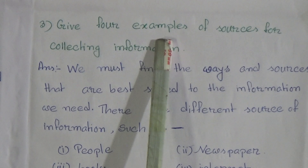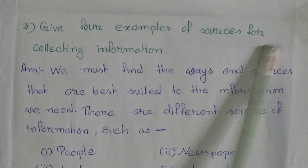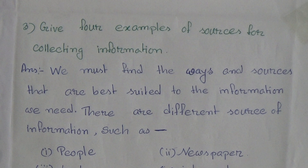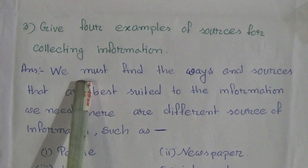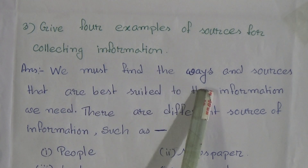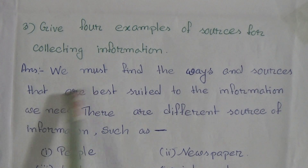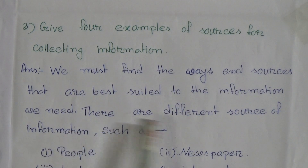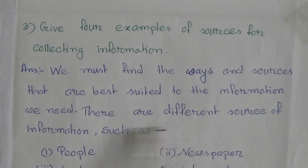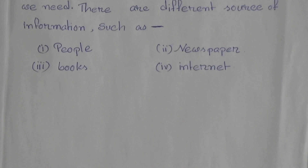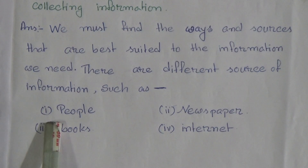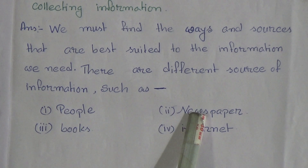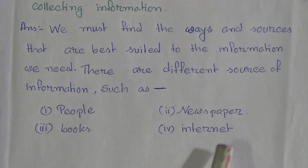Question 3: Give four examples of sources for collecting information. Answer: We must find the ways and sources that are best suited to the information we need. There are different sources of information, such as: number 1, people; number 2, newspaper; number 3, books.